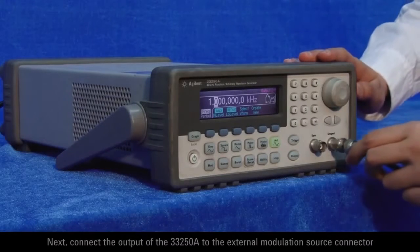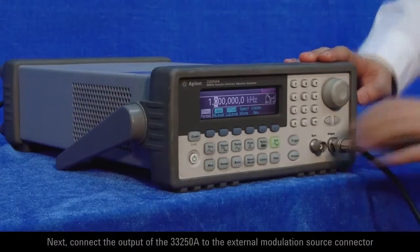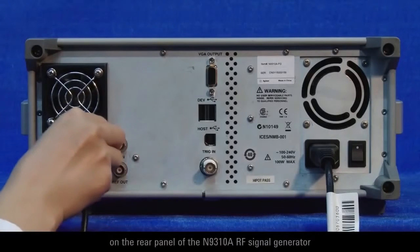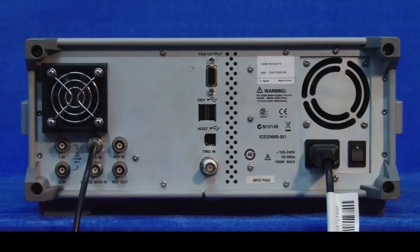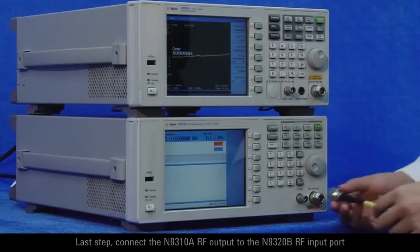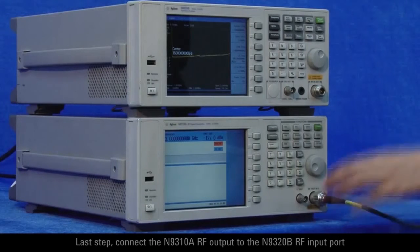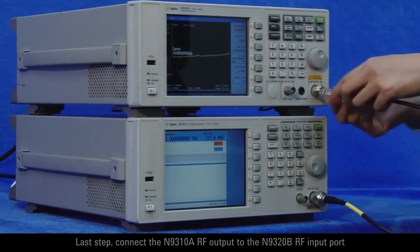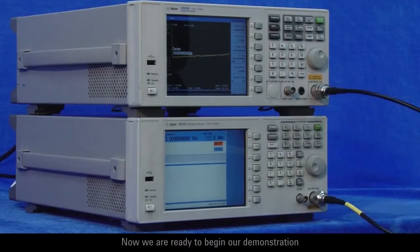Next, connect the output of the 33250A to the external modulation source connector on the rear panel of the N9310A RF signal generator. Last step, connect the N9310A RF output to the N9320B RF input port. Now, we are ready to begin our demonstration.